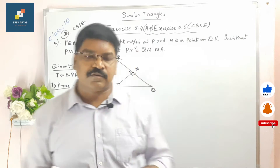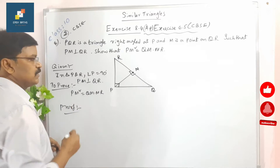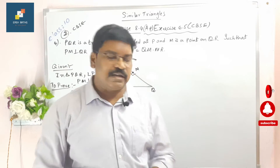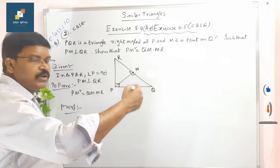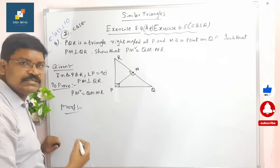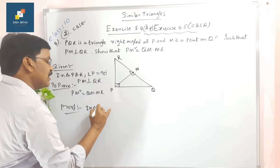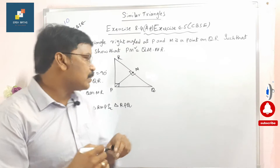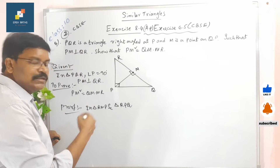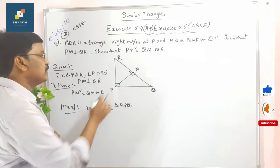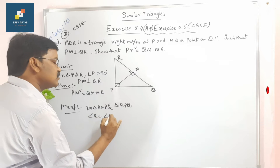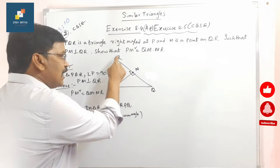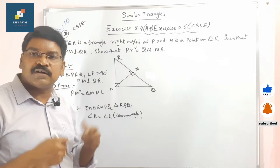Now we start the proof. In the proof, what we have to prove here is PM squared equals QM times MR. We will take two triangles, just like the proof of the Pythagoras theorem. The two triangles are: triangle RMP and triangle RPQ. In these two triangles, let us prove they are similar to each other. In triangle RMP and triangle RPQ, angle R is equal to angle R — this is the common angle for both triangles.